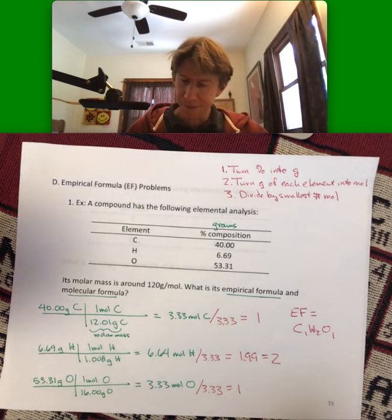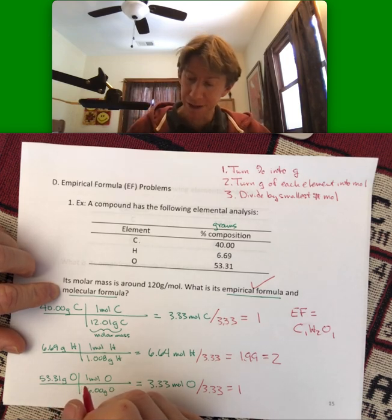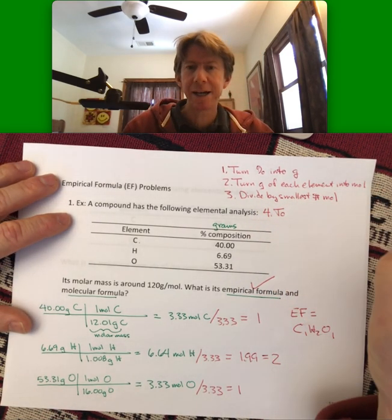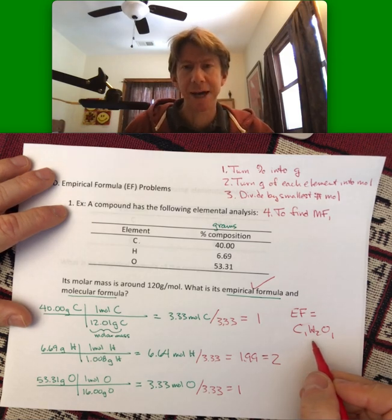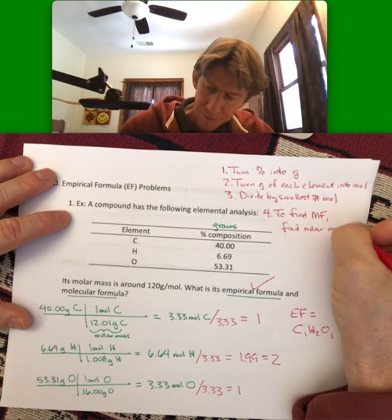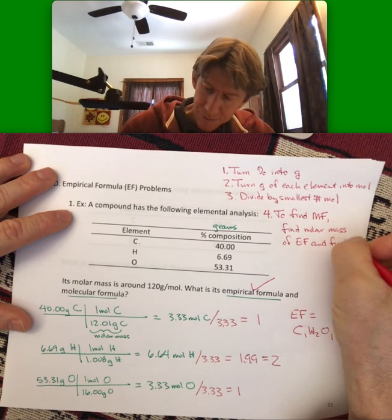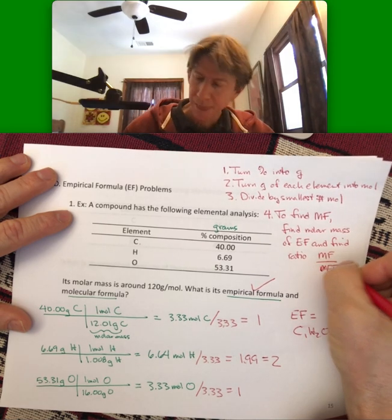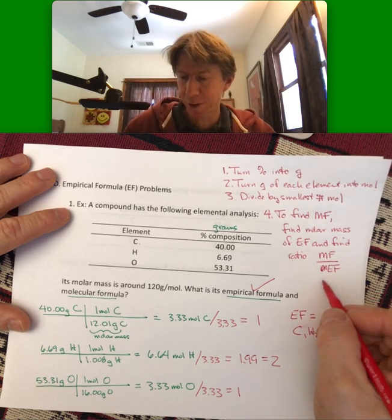And we do have our small rounding error. I mean, this could be down to 1.97, right, 0.03 off, or up to 2.03 and still be considered rounding, and a rounding error away from a whole number 2. Now, this is the empirical formula. We have not done the molecular formula. And for the molecular formula, that's going to be step 4. Step 4, to find molecular formula, find molar mass of empirical formula and find ratio of molar masses, molecular formula divided by empirical formula. Let's do that before we fill in step 5.